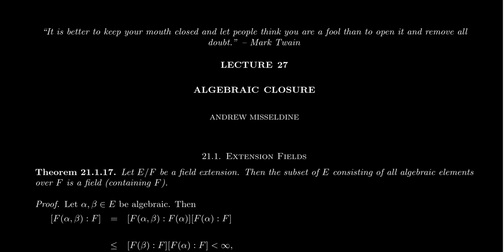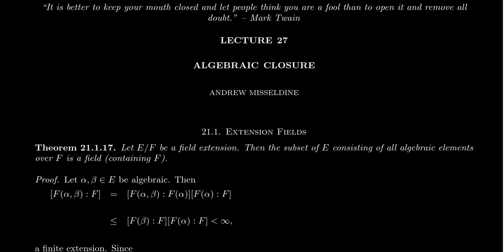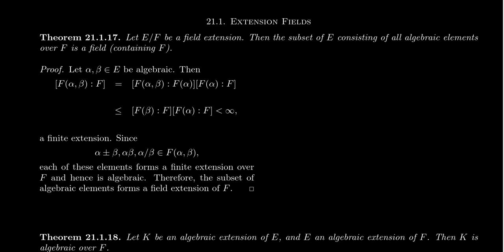In lectures 25 and 26, we introduced the idea of algebraic extensions of fields. Particularly in lecture 26, we developed the theory of algebraic extensions, talked about finite extensions and how finite field extensions are always algebraic. In lecture 27, we wanted to develop the idea of an algebraically closed field and define the notion of the algebraic closure of a field. In this first video, I want to continue to develop some of the properties of algebraic extensions that we're going to need to talk about algebraically closed fields.